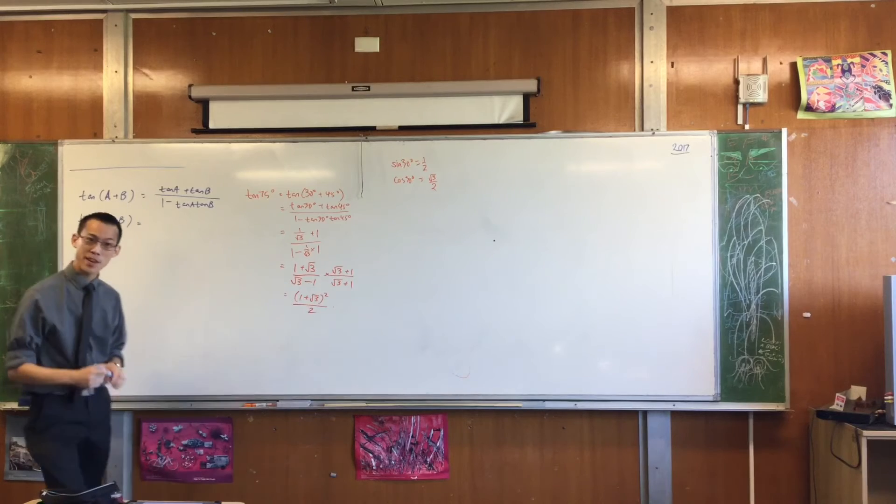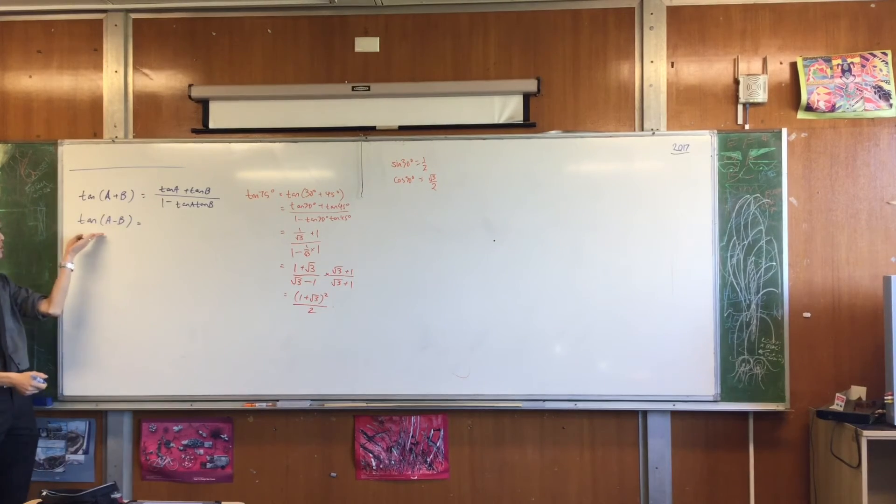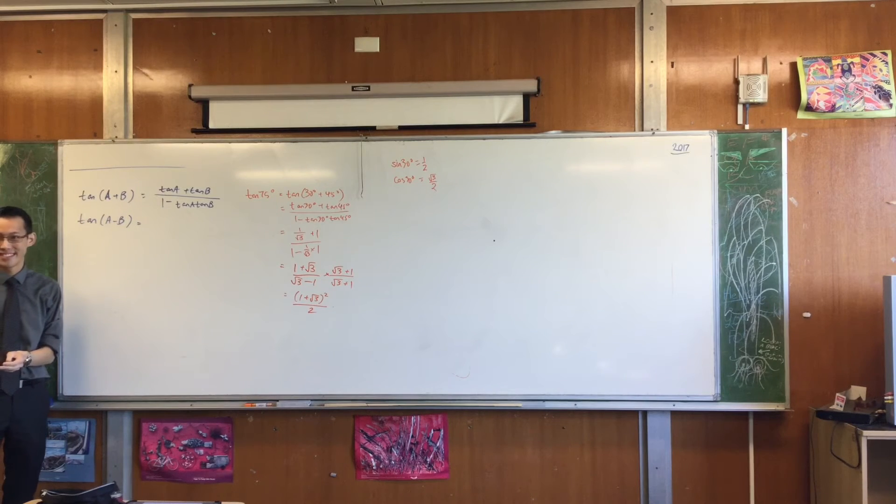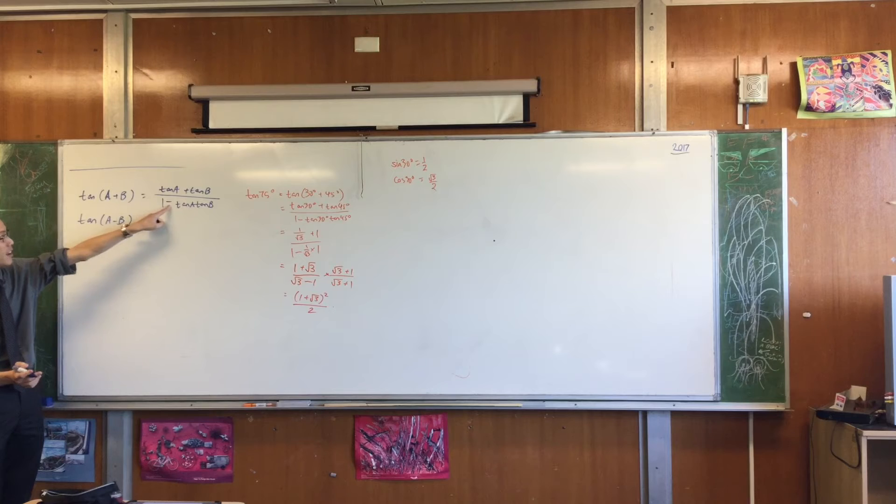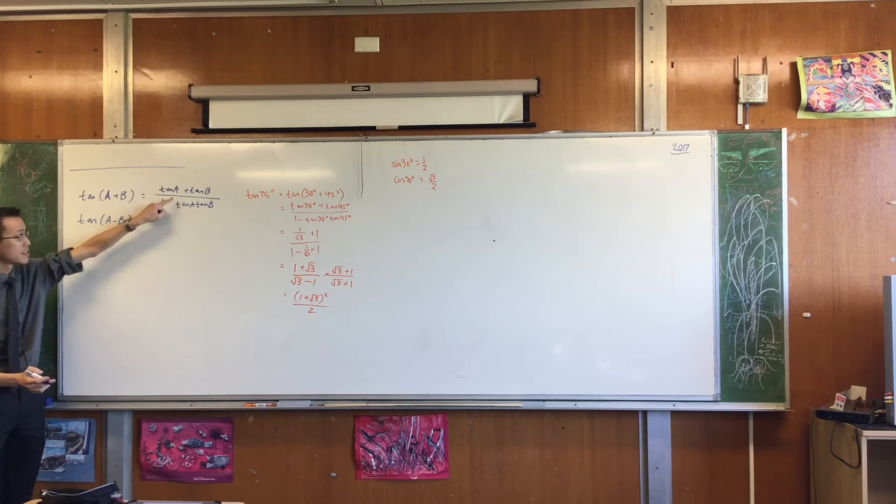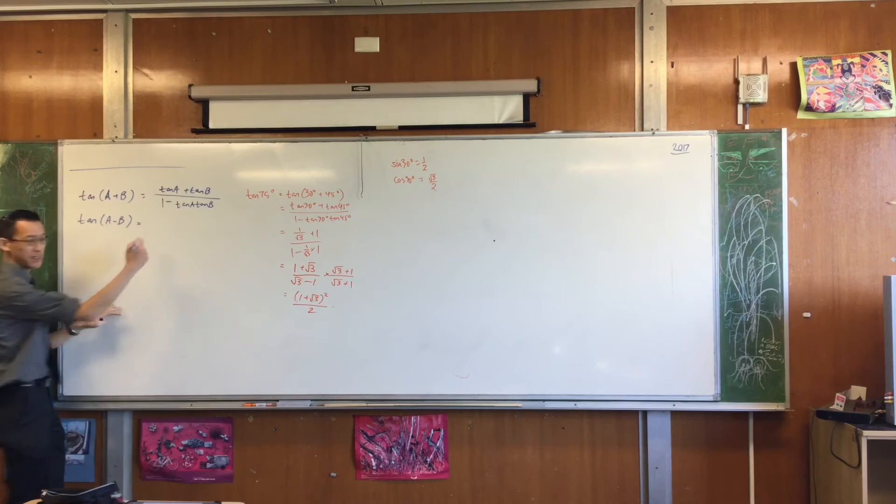When we had tan A plus B on the board, immediately the next thing was we went to, well, what happens if it's the difference of A instead of the sum? Do you remember what changes? The plus on the numerator becomes a minus. Yeah. So this becomes a plus. This becomes a minus. You're just swapping the signs. Just write that down.